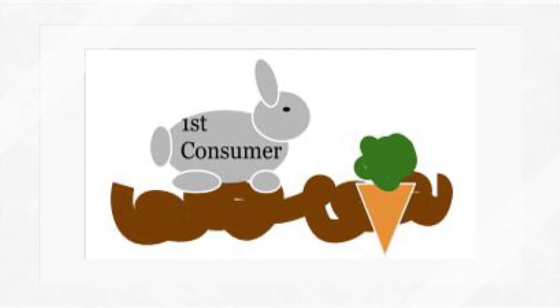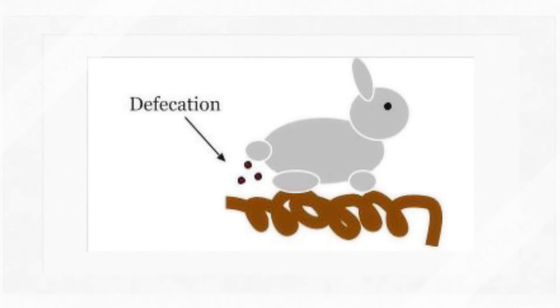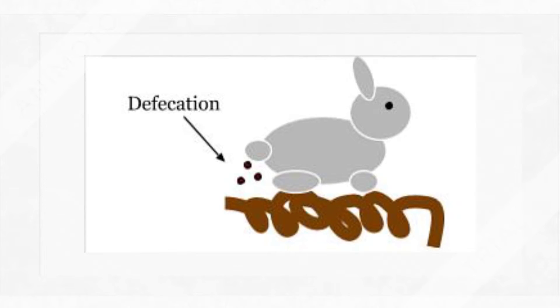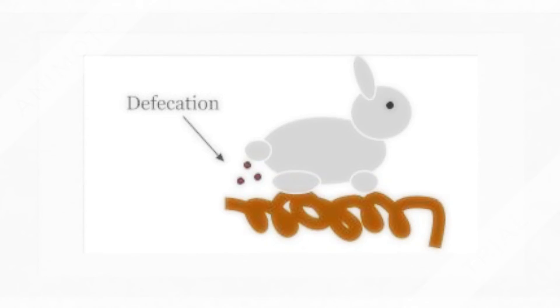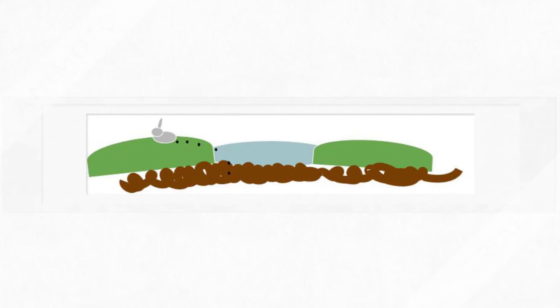The first consumer defecates, putting the phosphorus back into the soil. From the soil, the defecation containing phosphorus runs off into water. It does not enter the water cycle — it goes back into the soil.